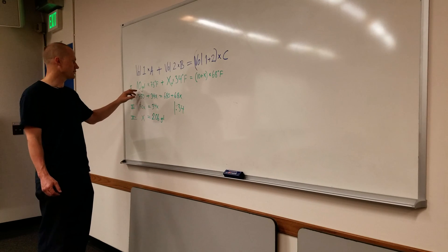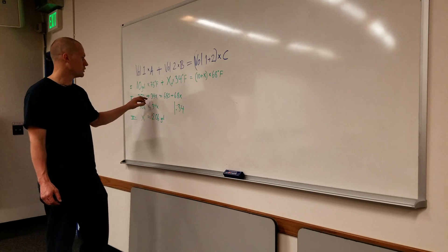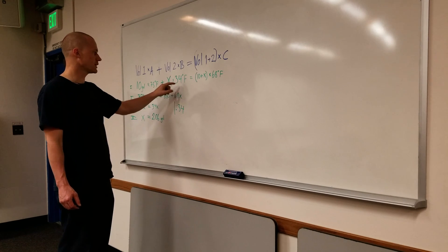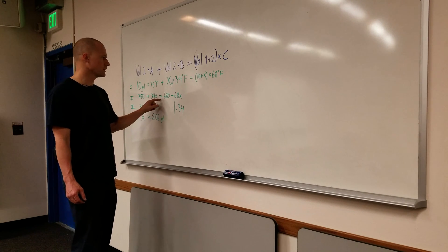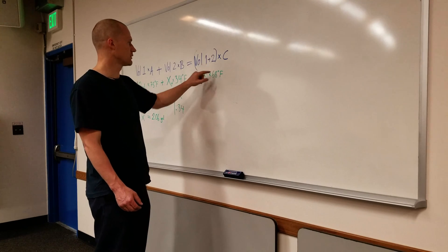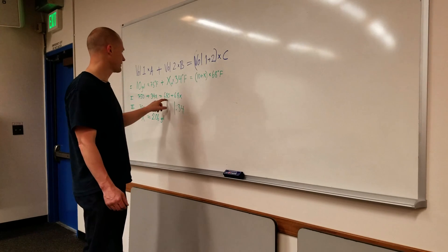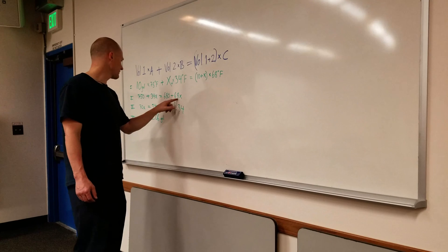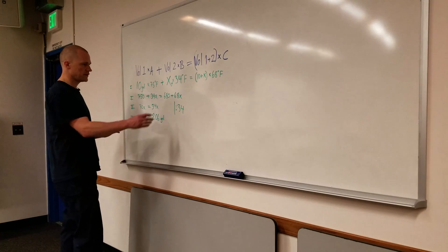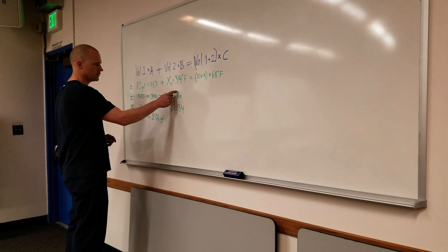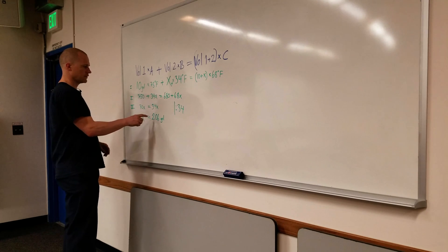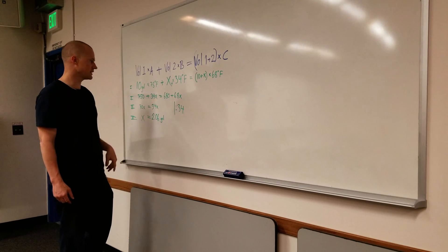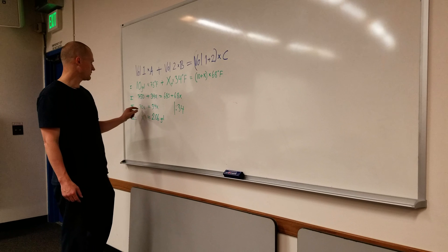So 75 times 10 is 750 plus 34 times x is 34x equals, then we have to distribute this out, 10 times 68 is 680 plus 68 times x is 68x. So we see where the most x we have on this side, so we'll subtract 34 from both sides, so we end up actually in this case with 34 still, because 68 minus 34 is 68. We have 750 on this side, we subtract off 680, we end up with 70.